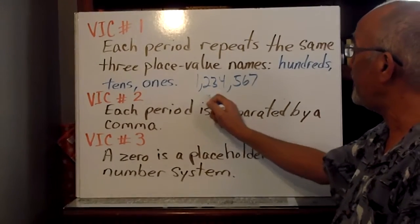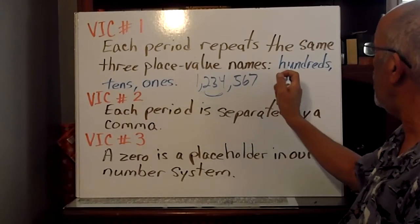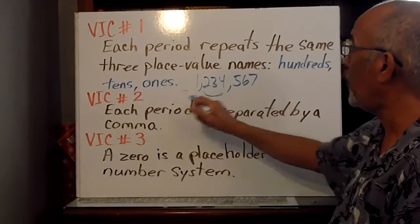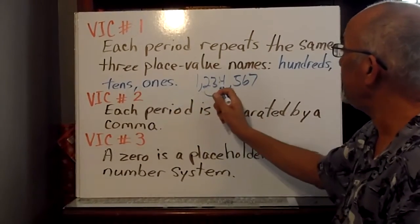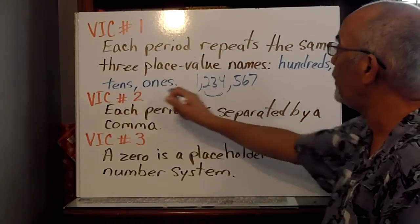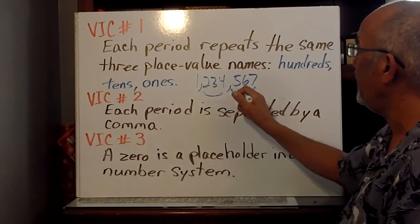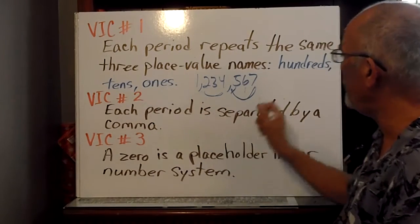In this period, we get two hundreds, three tens, four ones. And we get the same thing here. Five in the hundreds, six in the tens, seven in the ones.